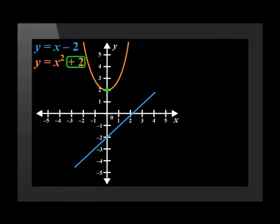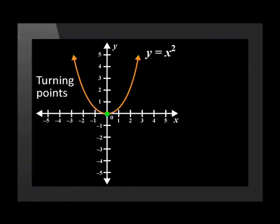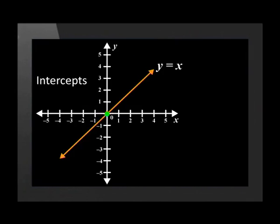Now let's look at what the straight line graph and the parabola have in common. The straight line graph and the parabola have y-intercepts that are equal to their q values. For example, this parabola has a q value of 2 and this line graph has a q value of negative 2. And don't forget the parabola has a turning point at the q value, and the graph of a straight line has a y-intercept that is equal to q.